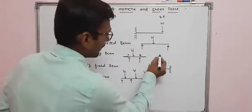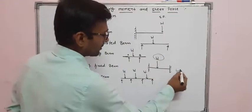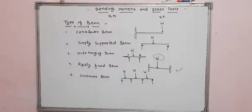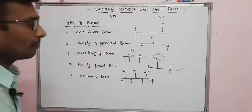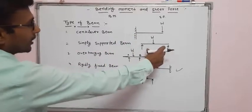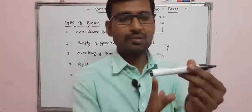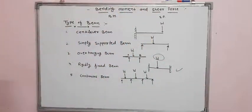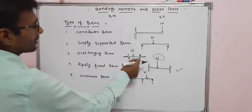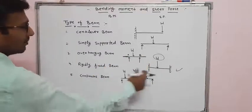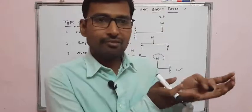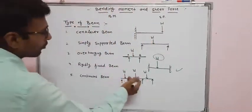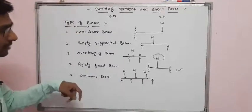In the rigidly fixed beam, both sides are fixed and the load is applied in the downward direction. So this beam is fixed on two sides. To summarize: cantilever beam — one side free, other side fixed; simply supported beam — both ends supported; overhanging beam — ends extend beyond supports.